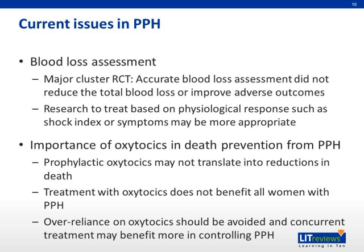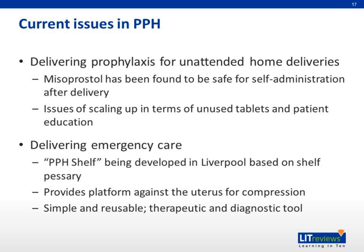Concurrent treatment should benefit the patient more in controlling bleeding, including blood transfusions, other medications such as prostaglandins, bimanual compression, and surgical methods. The third issue is delivering prophylaxis for unattended home deliveries. Misoprostol has been found to be safe for self-administration after delivery in some trials, because it can be taken orally, unlike oxytocin which must be stored at low temperature in a fridge and given intramuscularly or intravenously. However, the issue of scaling up is still debated, as safe management of unused tablets has not been demonstrated and patient education on safe misoprostol use has proven difficult.